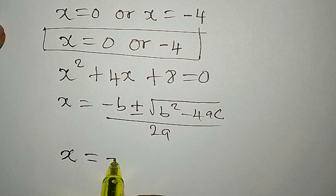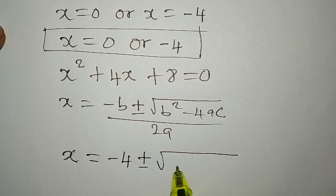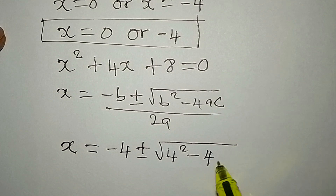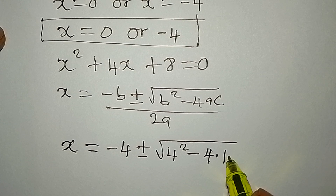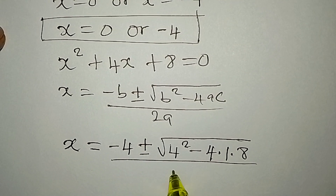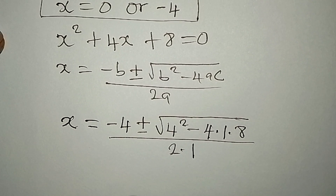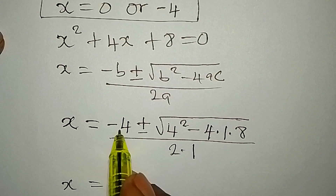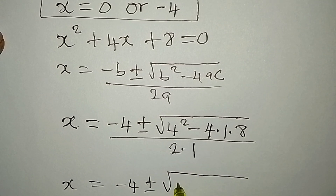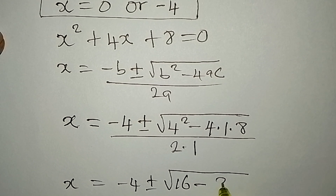Substituting: x equals negative 4 plus or minus the square root of 4 squared minus 4 times 1 times 8, all over 2 times 1. Inside the square root: 4 squared is 16, and 4 times 1 times 8 is 32.